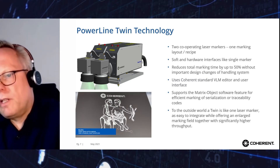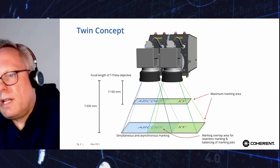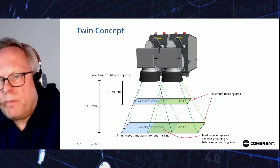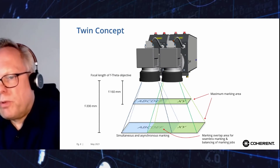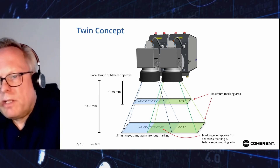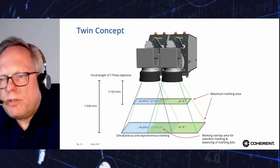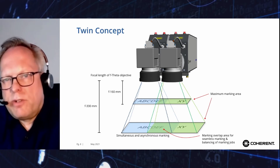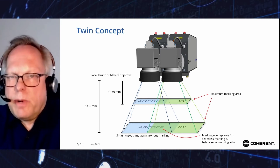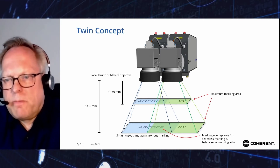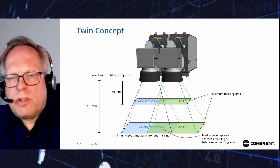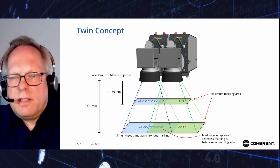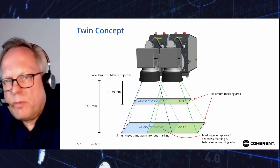Unlike multi-step marking, TWINs utilize overlapping marking fields. In the overlap area, both laser markers operate cooperatively. This allows balancing the marking load for both lasers in case the left and right sides of the layout require different marking times.